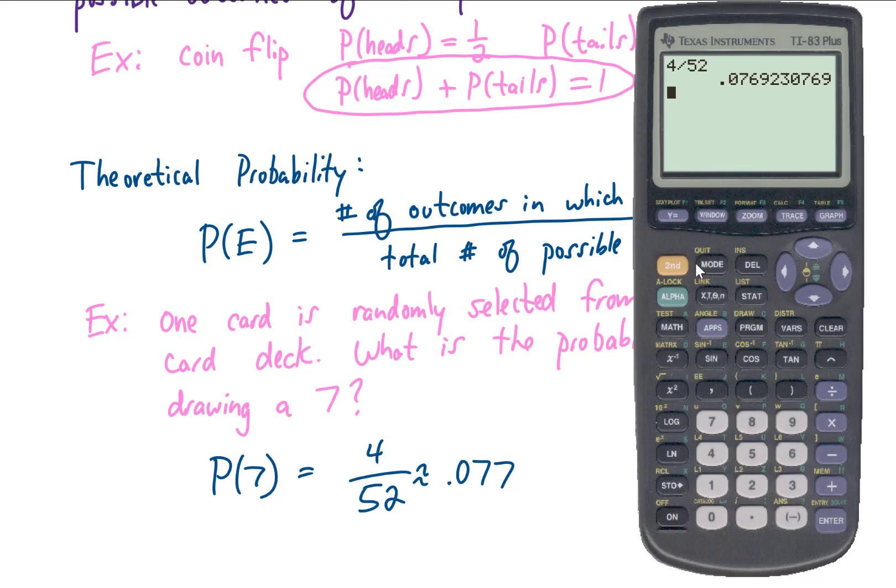And just to show you, if you wanted to write this as a reduced fraction, you could click the Math button on your calculator, then hit Enter. That asks the calculator to turn this decimal into a fraction. If you hit Enter, it gives you the reduced fraction of 1 thirteenth. Or we can say we have a 1 out of 13 chance of drawing a 7.